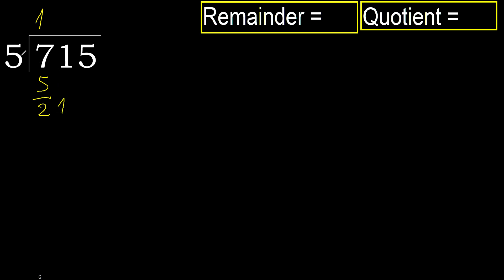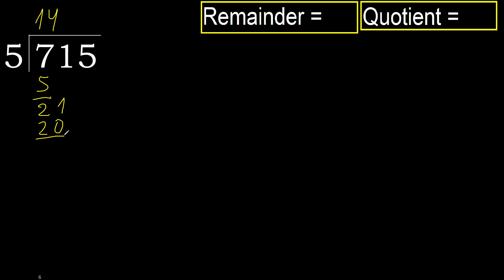Next, 21. 5 multiplied by 5 is 25, 25 is greater. Multiplied by 4 is 20, 20 is not greater. OK.